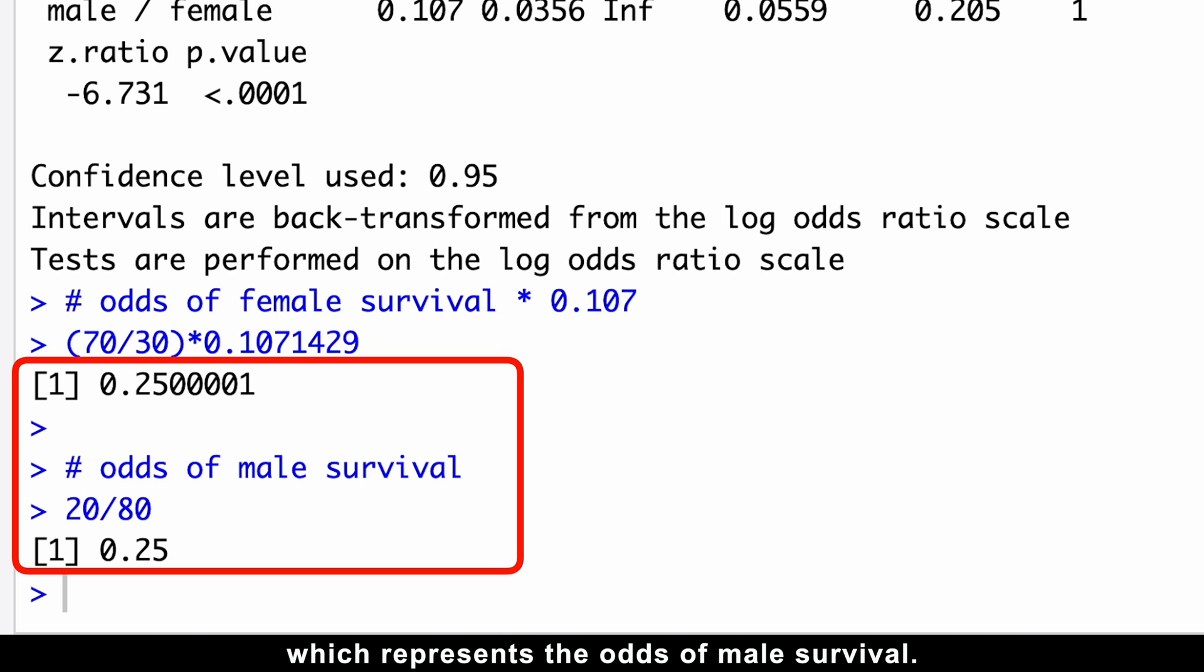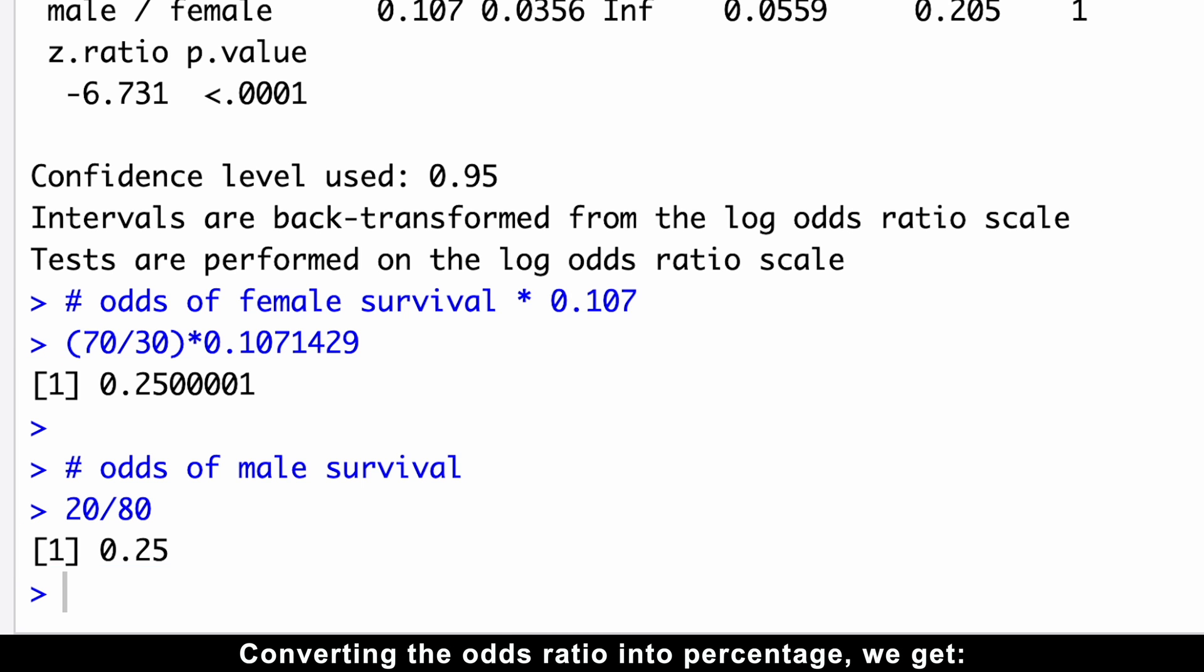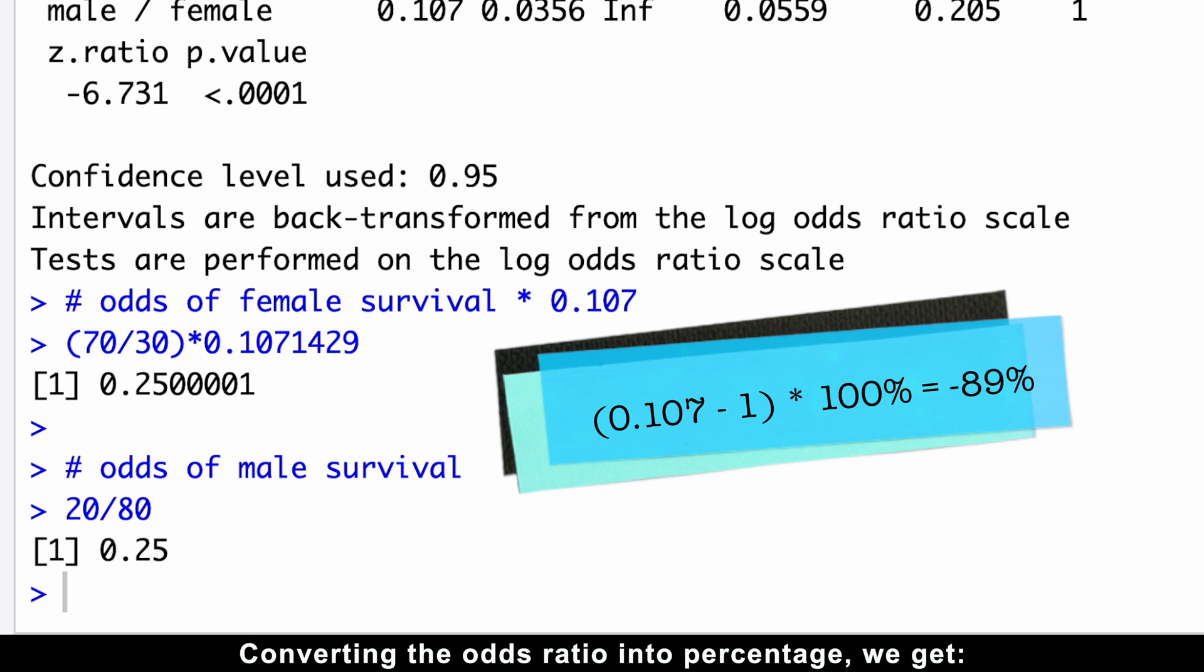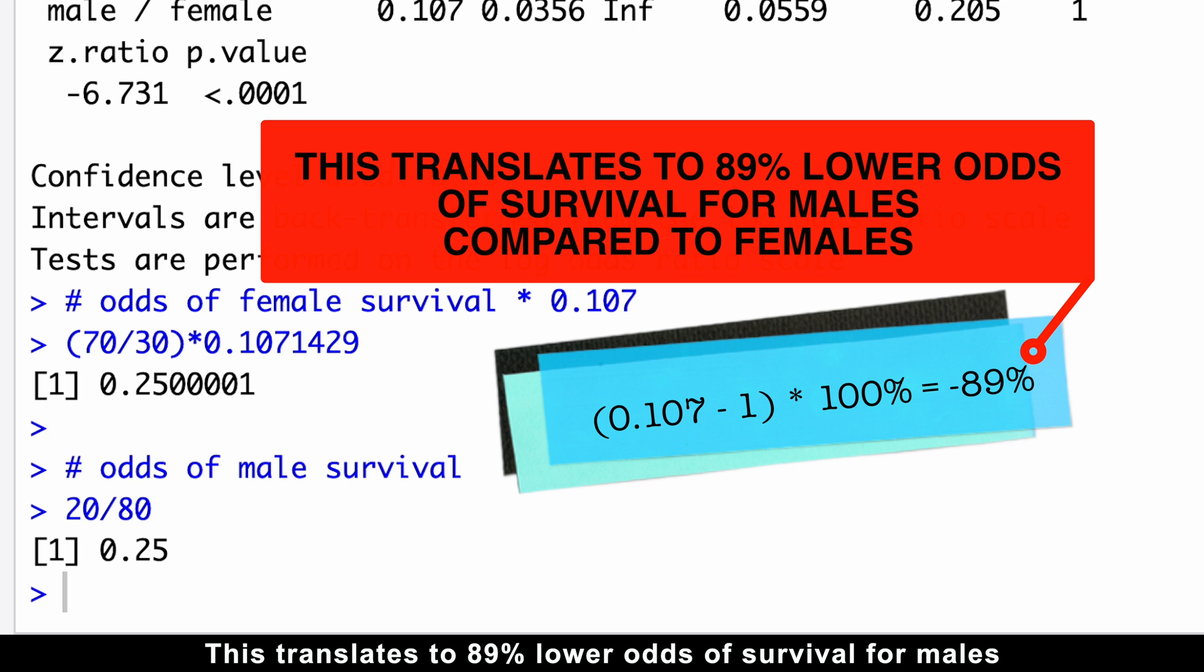Converting the odds ratio into the percentage, we get 0.1 minus 1 times 100%, which equals minus 89%. This translates to 89% lower odds of survival for males compared to females.